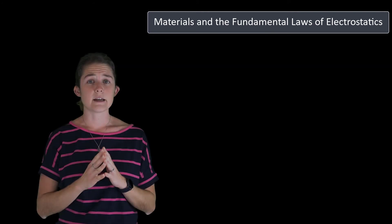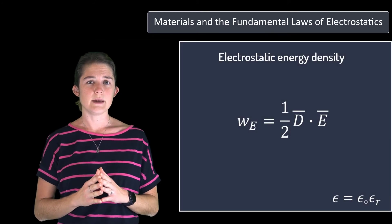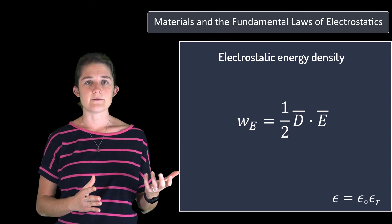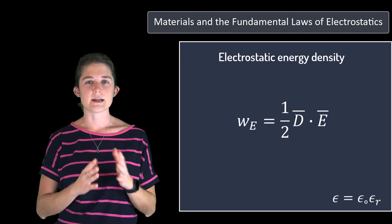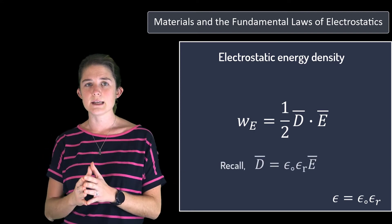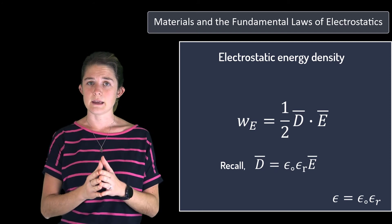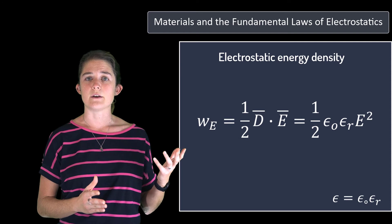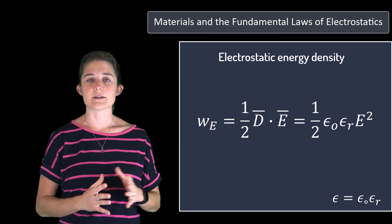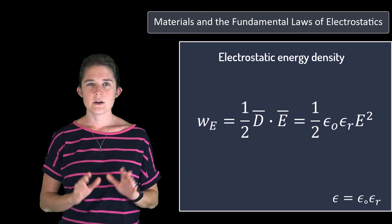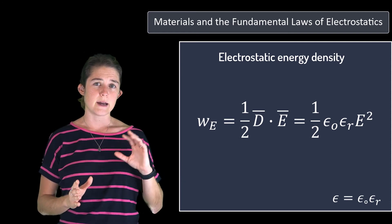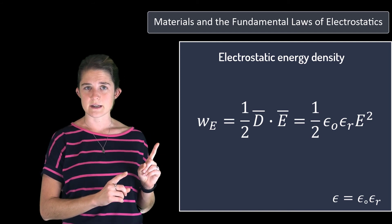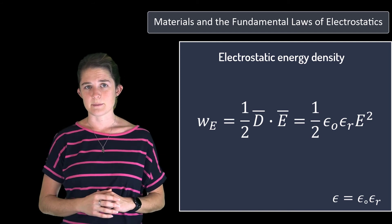The electrostatic energy density stored in a medium of relative permittivity epsilon_r is given by one-half D dot E, as before, except now D equals epsilon E, so this can be rewritten as one-half epsilon-naught epsilon_r times the squared magnitude of E. Note that scaling epsilon-naught by epsilon_r increases the stored energy density for the same electric field magnitude.